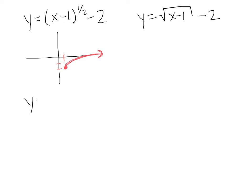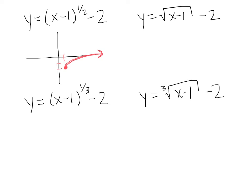Let's look at a cube root: y = (x - 1)^(1/3) - 2, which means y = ∛(x - 1) - 2. Starting at the point shifted right 1 and down 2, the cube root looks like a cubic graph laid on its side — a flattened S shape. With a fractional power, we don't need to say whether it's even or odd — it's clearly neither.